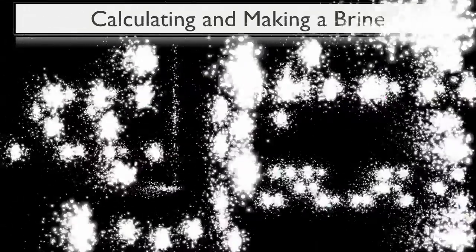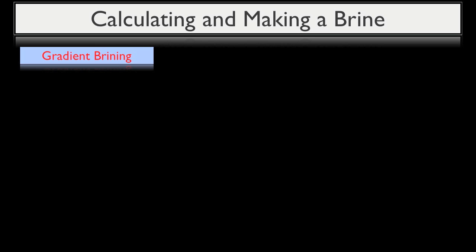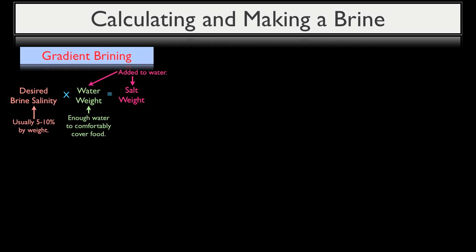So first, let's cover gradient brining. To calculate the amount of salt you'll need for any given gradient brine, use the following formula: desired brine salinity times water weight equals the salt weight, which is then added to the water. Now, the salinity of a gradient brine is usually between 5% to 10% salt based on the water's weight.